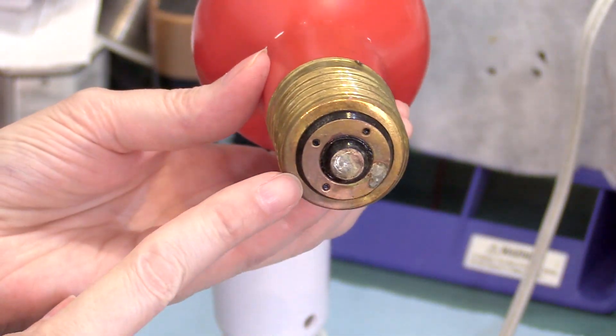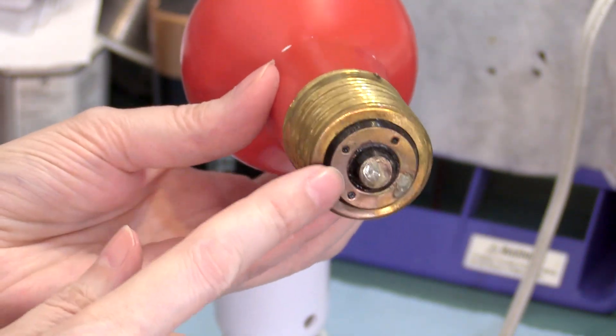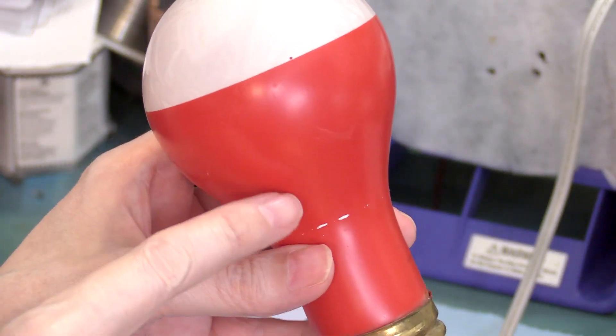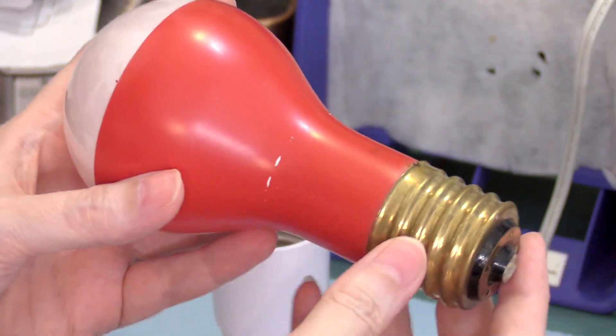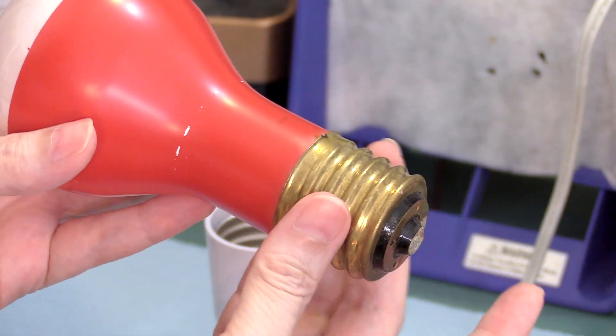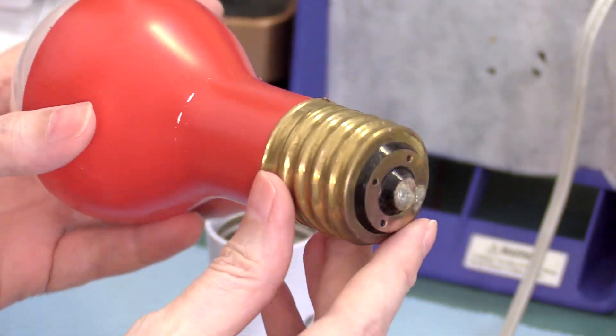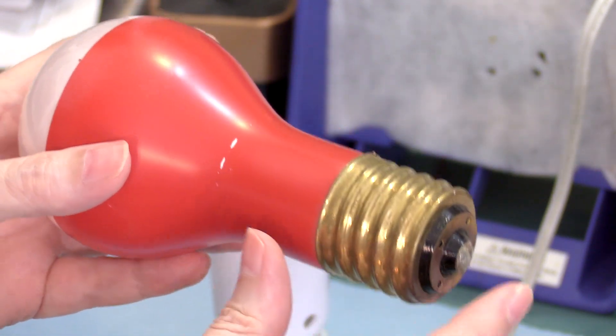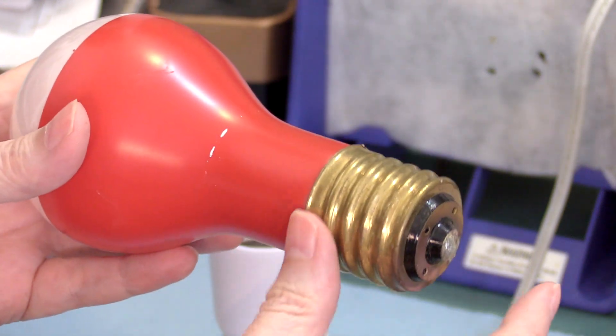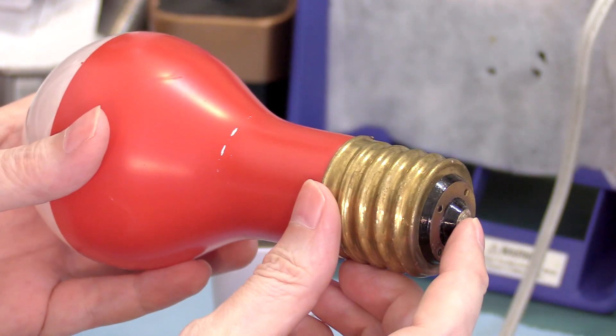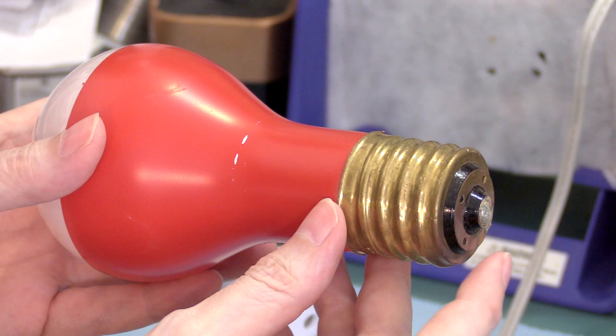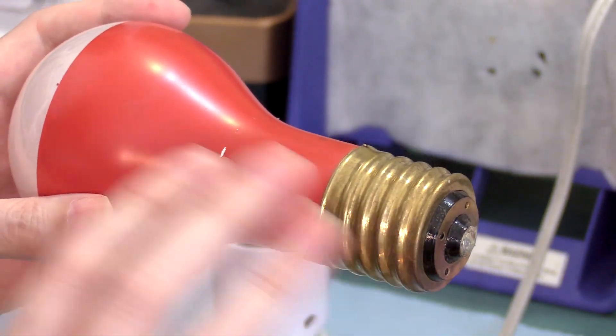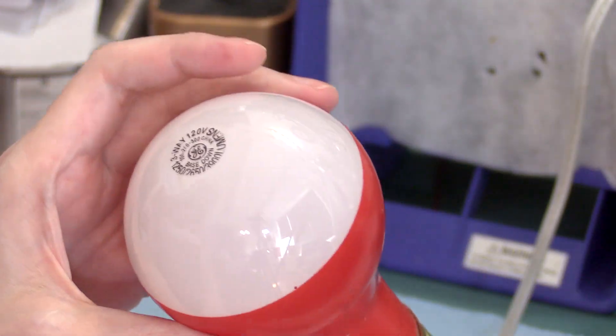And this is also a three-way. See this little ridge here. It's a three-way because there's two different filaments. You've got a low-power filament, which goes between the common, which is on the threads, and this outer shoulder. That's the low-power filament. And then the medium filament is between the common and the tip. And then if you have the tip and the shoulder both on the hot and this to the common, then you've got both of the filaments on and you're on high power.